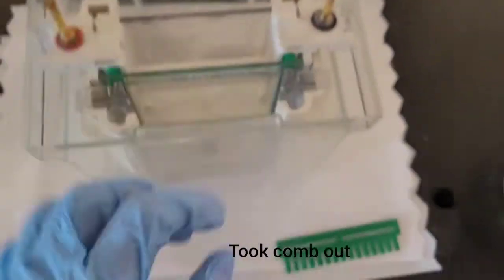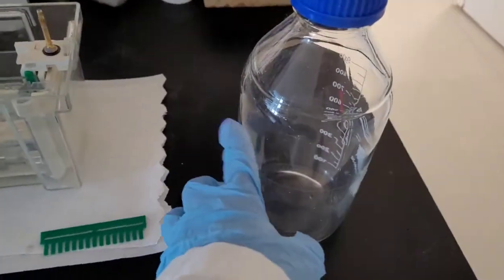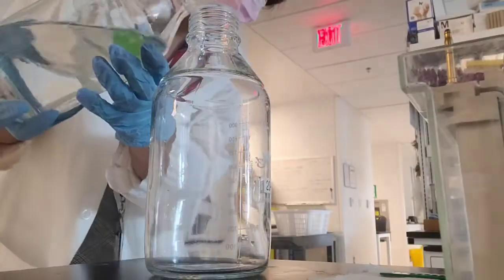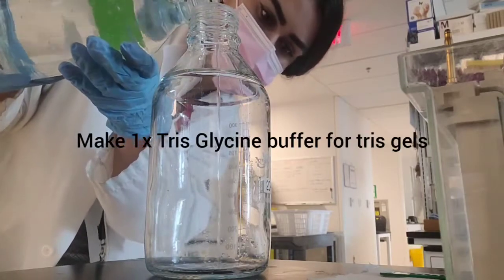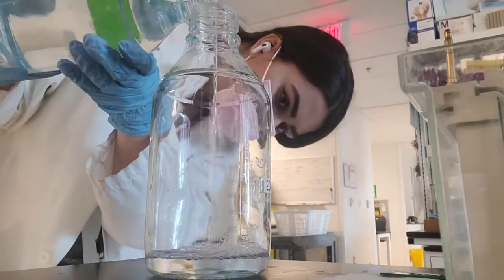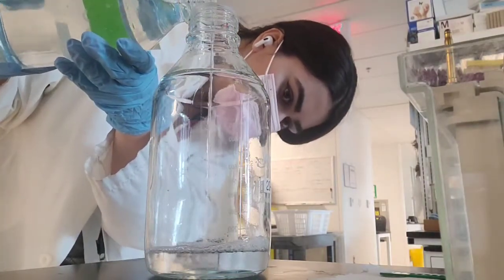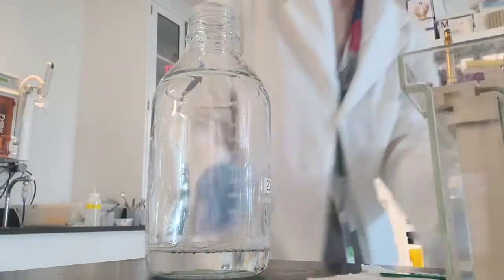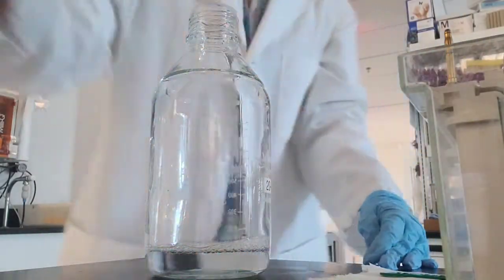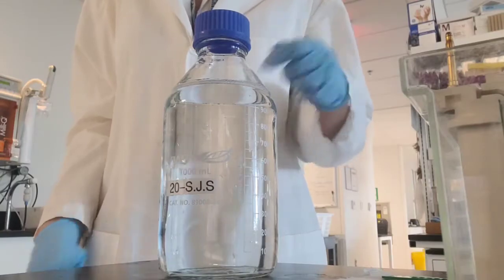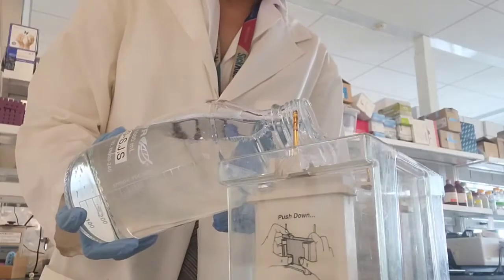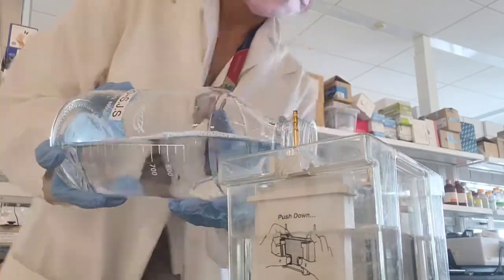put it back in the holder. Then you want to make a 1x Tris-glycine buffer. I'm making it from 10x, so I'm doing 100 mL and filling the rest with water. Give it a few minutes to mix well, then pour it inside.